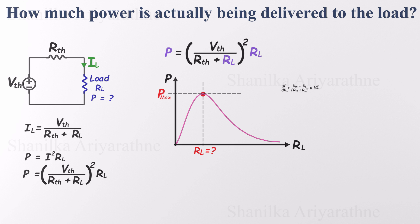To find that, we take the derivative of the power function with respect to RL and set it equal to zero, because at the peak, the slope of the graph is flat. Solving this gives us a very elegant result: when slope is flat, RL equals RTH. That's the key idea behind the maximum power transfer theorem.